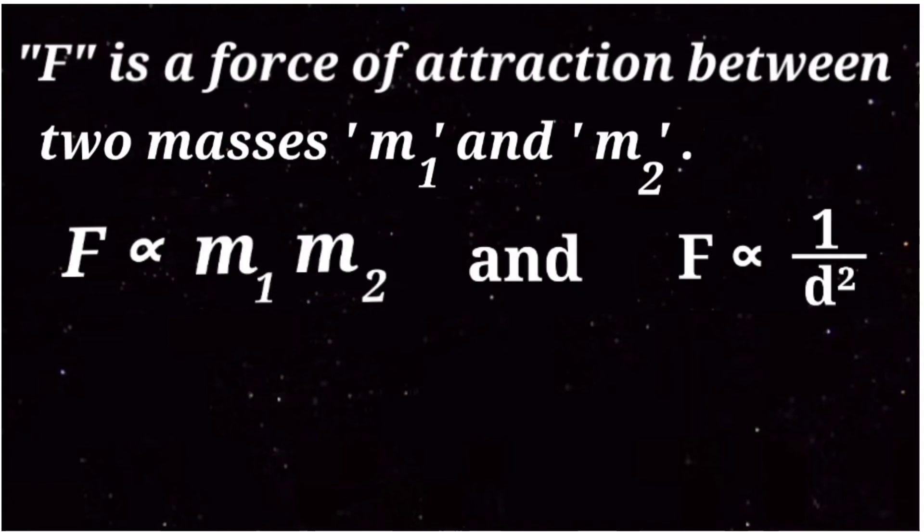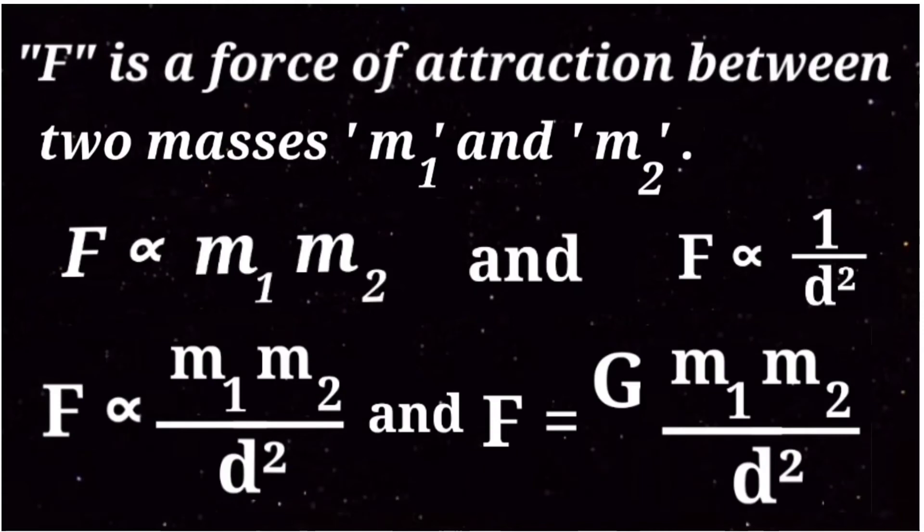It means if the distance between the centers of the masses is greater, the force of attraction is smaller. Then F is proportional to M1 M2 over d squared, and F equals G M1 M2 over d squared.